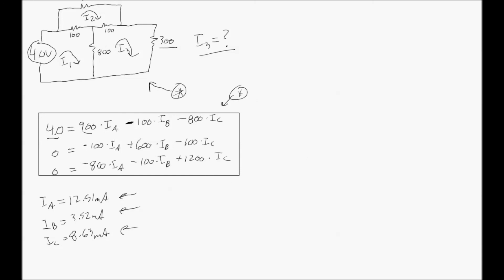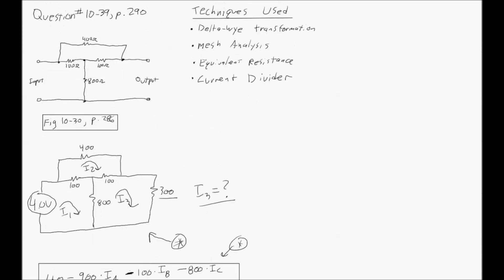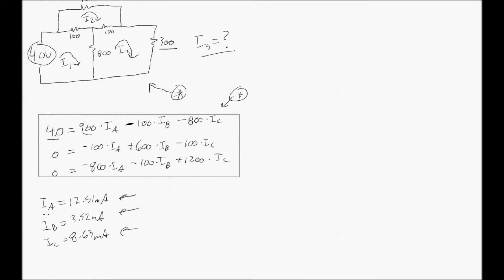Because it's as easy as just punching in the numbers and you get your answers straight away. Remember from our first using the other techniques, the current flowing through the power supply? 12.51 milliamps. It's the same. It's exactly the same answer.